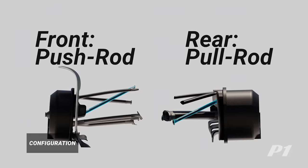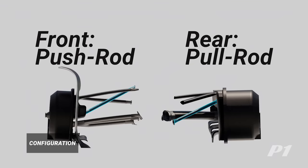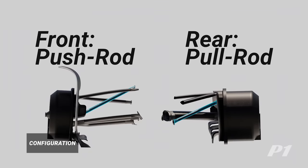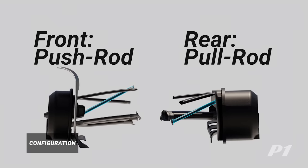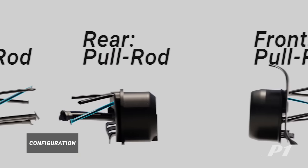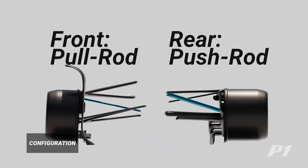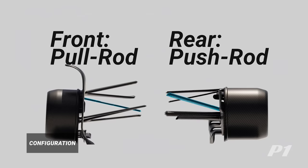Historically, many F1 cars have pushrods at the front and pullrods at the back. This is largely because pushrods offer more flexibility at the front and pullrods allow for a cleaner aero package at the back. But there are exceptions to that rule — for example, both Red Bull and McLaren utilize the pullrod at the front of their 2023 cars and pushrods at the rear.